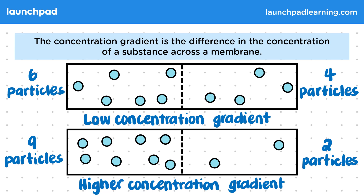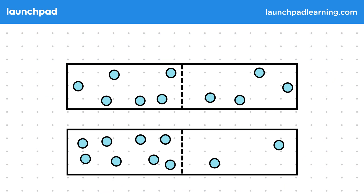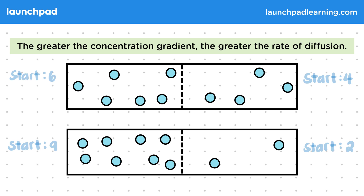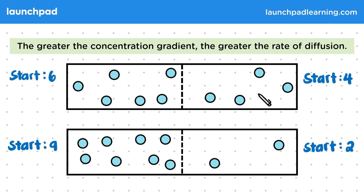So how does the size of the concentration gradient affect the rate of diffusion? The greater the concentration gradient, the greater the rate of diffusion. Starting with six particles on the left and four on the right gives a small concentration gradient, so this box would show a low rate of diffusion.